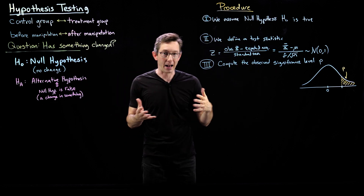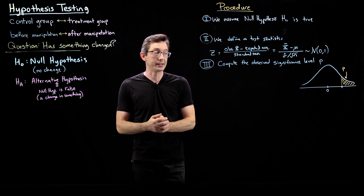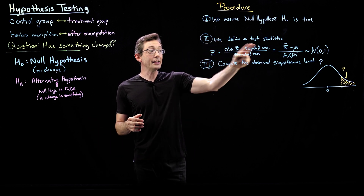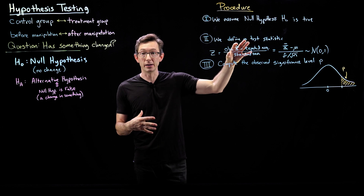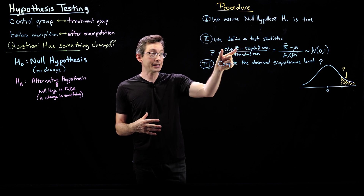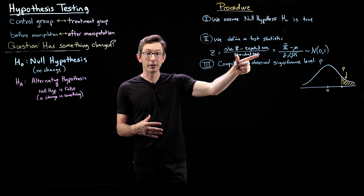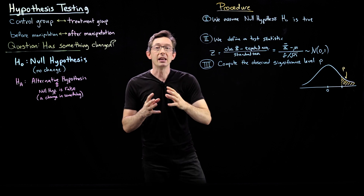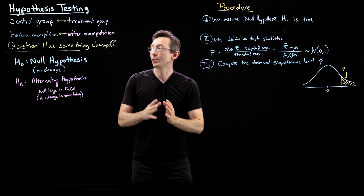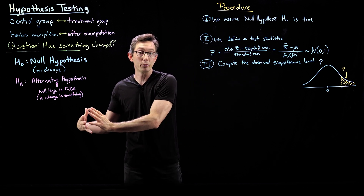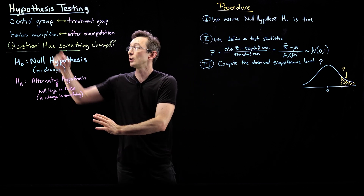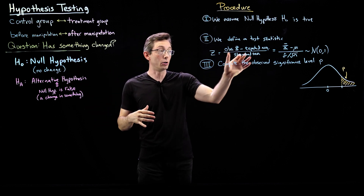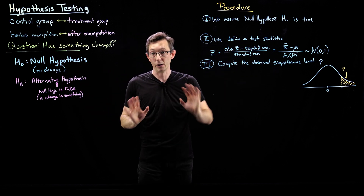This is a recap — we did an example of this in the last lecture. These are numbers that you compute: X-bar is data, standard error is from data, and the expected average is either some previous knowledge about your previous distribution or it's data you collect from a control group. So you can compute all of the terms in this equation.